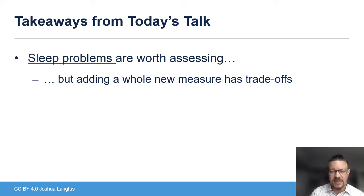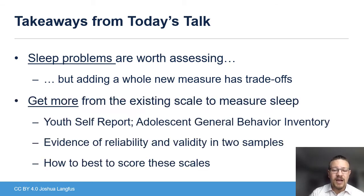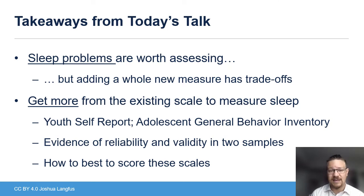There are two things I hope you take away from today's talk. One is that sleep problems are worth assessing. But adding a whole new measure has trade-offs — clinicians have to be judicious about the time they spend on intakes, and adding narrowband measures for specific issues that are part of presenting concerns takes up valuable time. So the second thing I want you to get out of this is that we can get more from existing measures to measure sleep. The two examples I'm going to talk about are the Youth Self-Report and the Adolescent General Behavior Inventory.